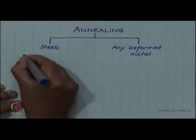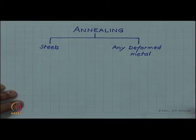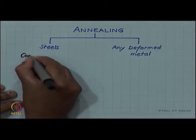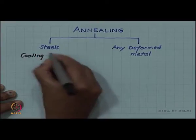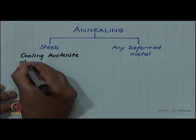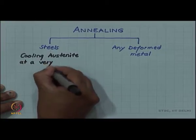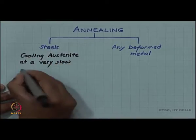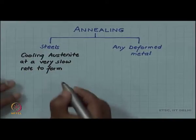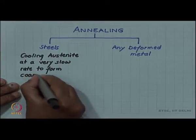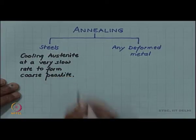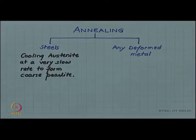There we saw that annealing meant cooling austenite at a very slow rate to form coarse pearlite. That is what we meant when we talked about annealing in case of steels.